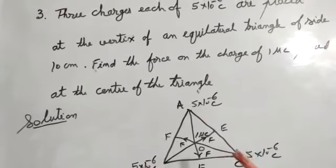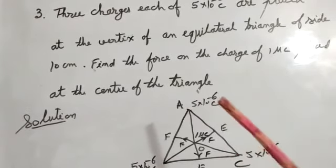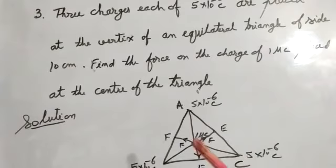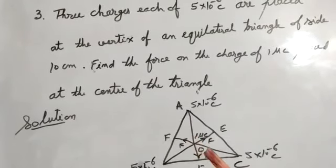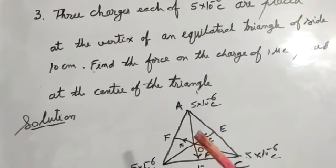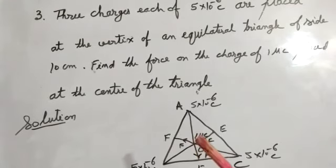There are three charges, each of 5 into 10 power minus 6, or centred - centroid bhi kah sakte ho, centred O-par, one microcoulomb ka charge hai.